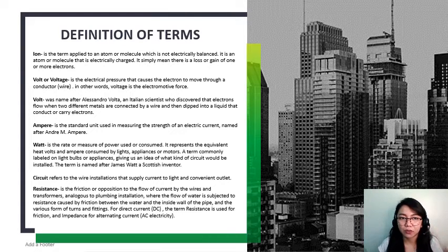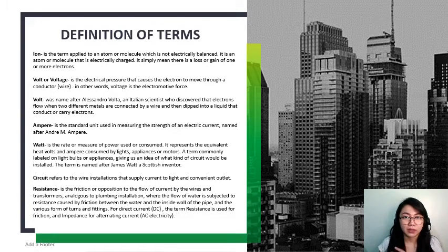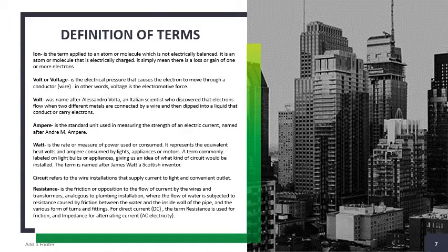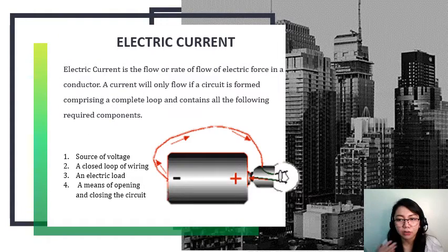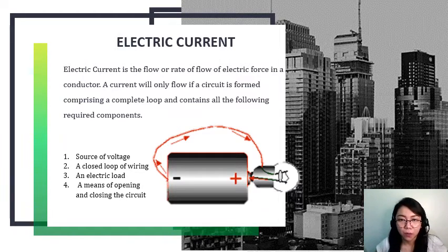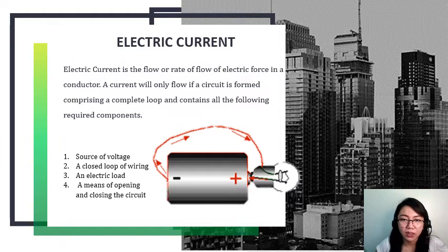Okay, so we have here the definition of terms. I'll give you some time to screenshot or read them on your own, because during this video lecture we're going to talk about mostly these terminologies. Now let's understand electric current. To define it: this is the flow or rate of flow of electric force in a conductor.